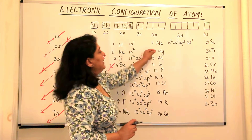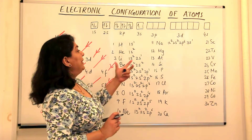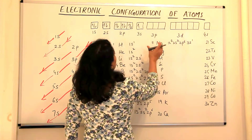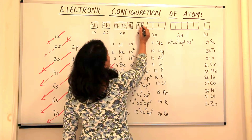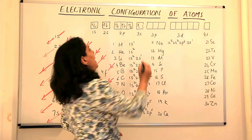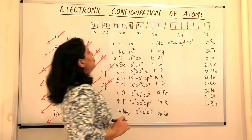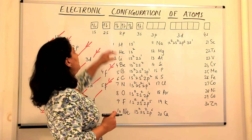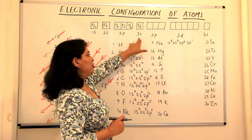The next element is magnesium. The 12th electron goes to 3s2, because the 3s orbital has a capacity of 2 electrons. So the configuration of magnesium is 1s2, 2s2, 2p6, and 3s2.